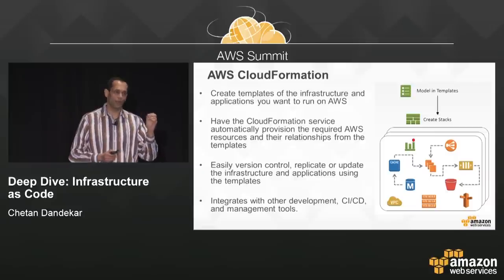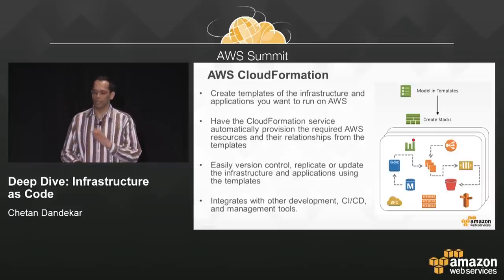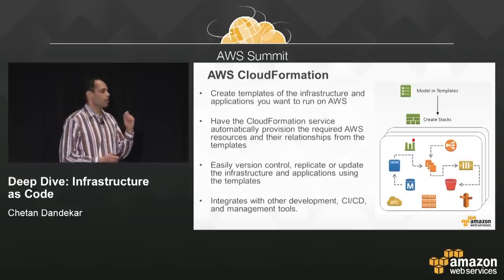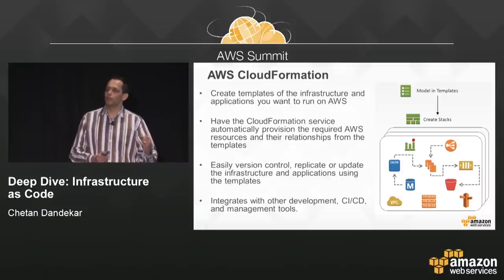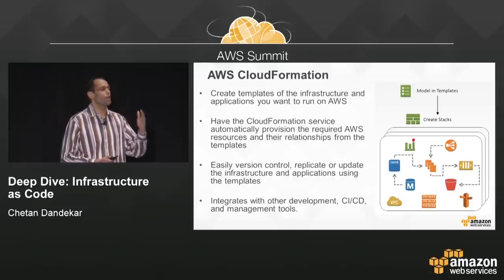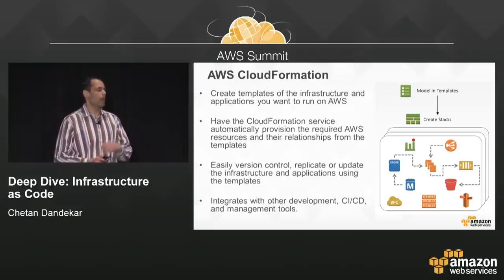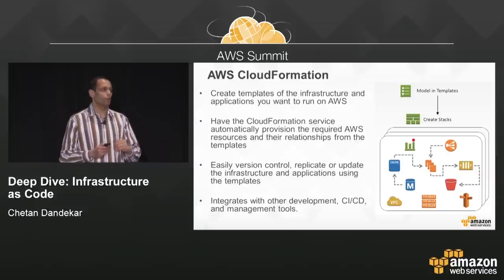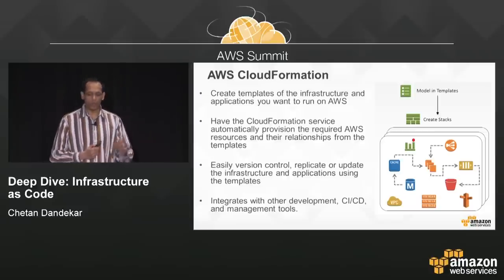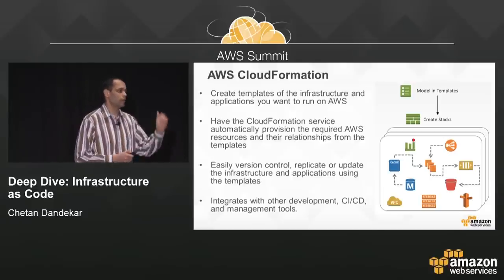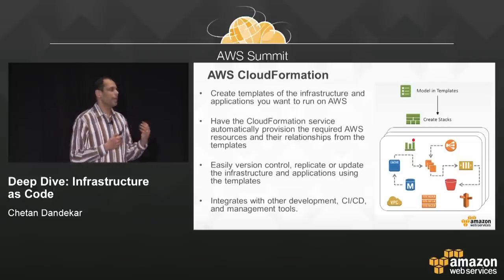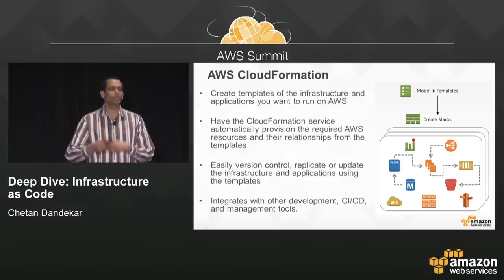You don't have to worry about the granular API calls for each individual service. For example, provisioning a web application might involve an S3 bucket, an RDS database, a web server, a CloudFront distribution, and more. With CloudFormation, you don't have to figure out individual API calls for each service, the order of creation for each resource, or failure modes. If a request times out, CloudFormation retries it automatically. This is fundamentally different from traditional provisioning scripts. It's more like building a CAD model and handing it to a 3D printer — the printer produces the desired object for you.